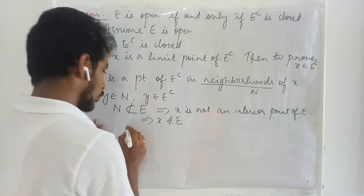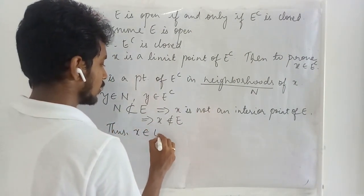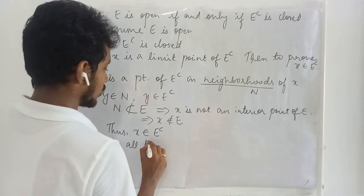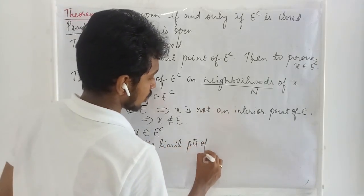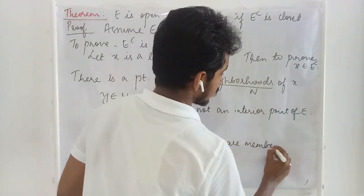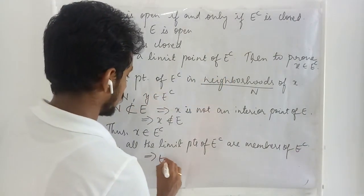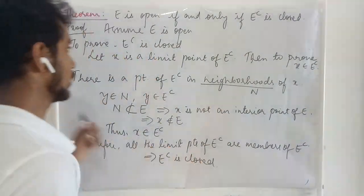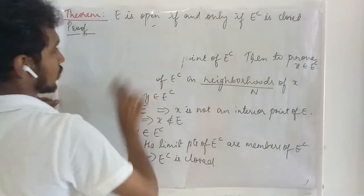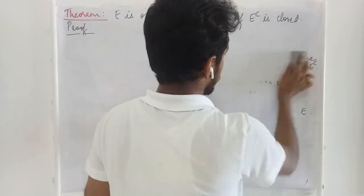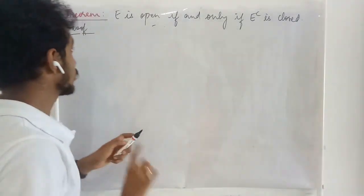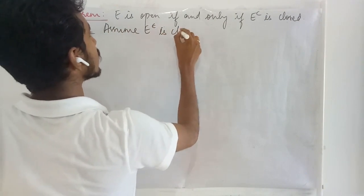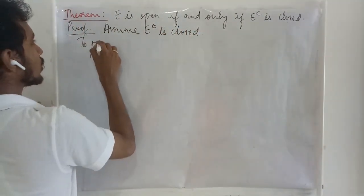If x is not a member of E, the only possibility left is that x is a member of E complement. So we have started with x being a limit point of E complement and proved x is a member of E complement. This shows E complement is closed, completing the first direction of the proof.